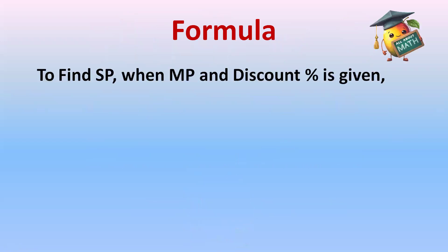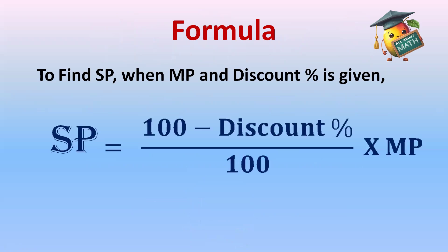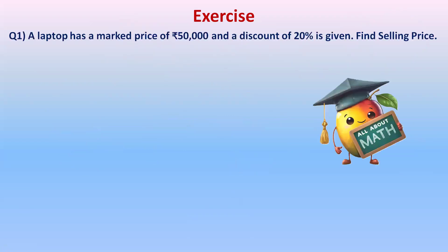The formula to find selling price when marked price and discount percent is given is: Selling Price = (100 − Discount%) / 100 × Mark Price. This formula is exactly the same as finding selling price when cost price and loss percent is given — we just replace loss percent with discount percent, and cost price with mark price. To remember it: discount means something is reducing, so 100 minus discount percent.